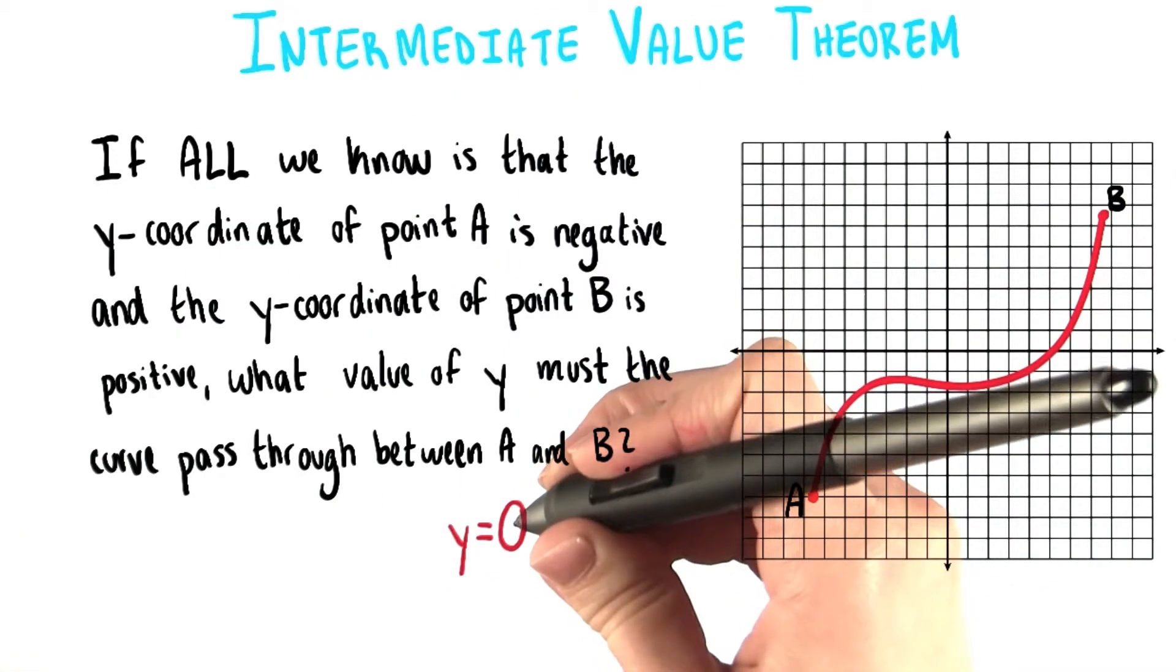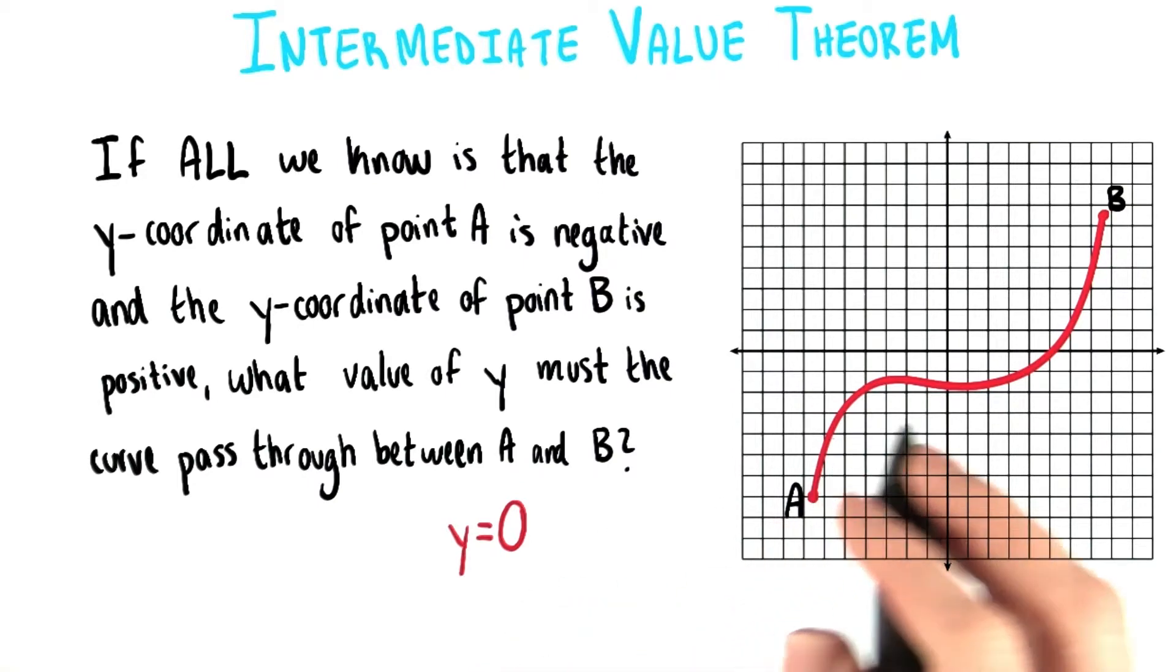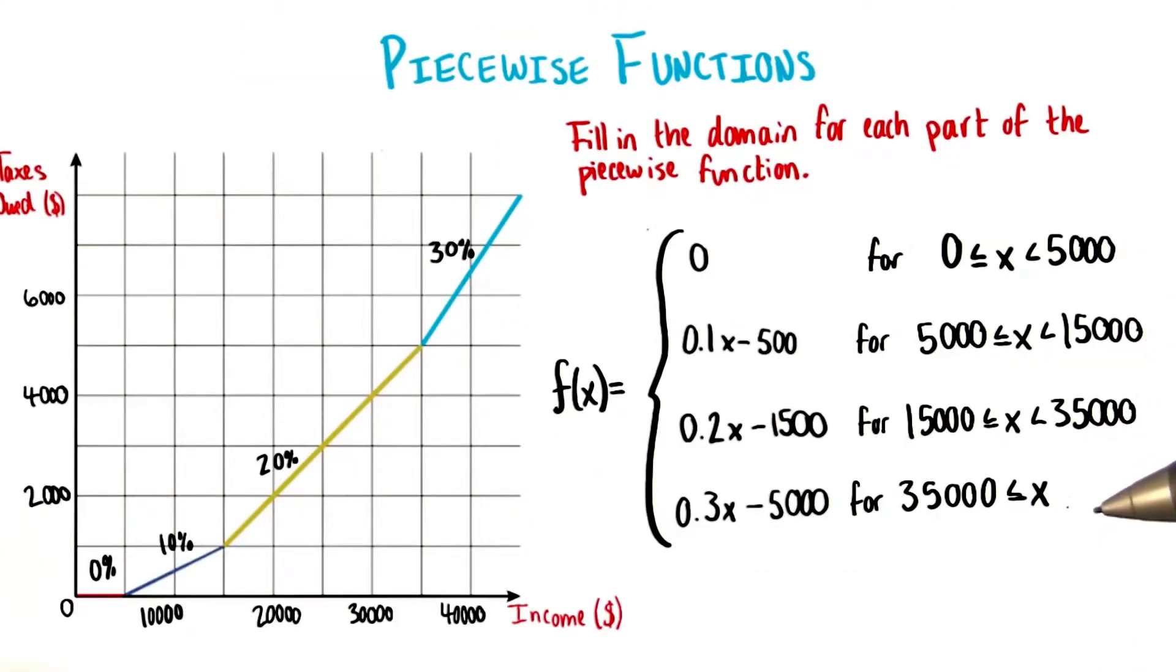When we couldn't find the exact values of zeros that we could see on graphs, the intermediate value theorem helped us approximate their locations. With piecewise functions, we got to put together some really interesting graphs and start thinking more about domain and range.